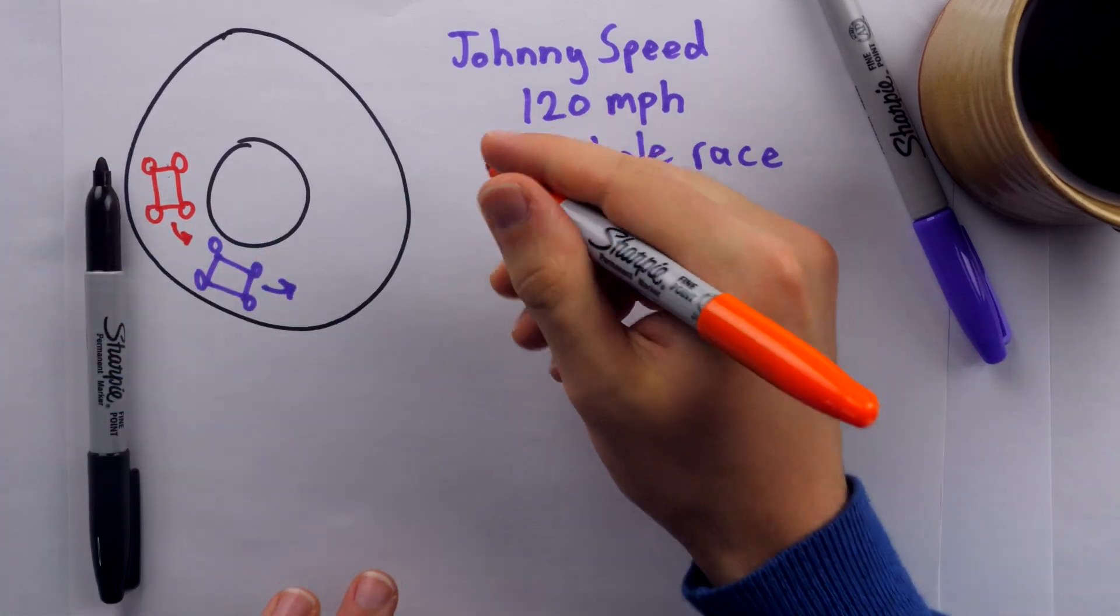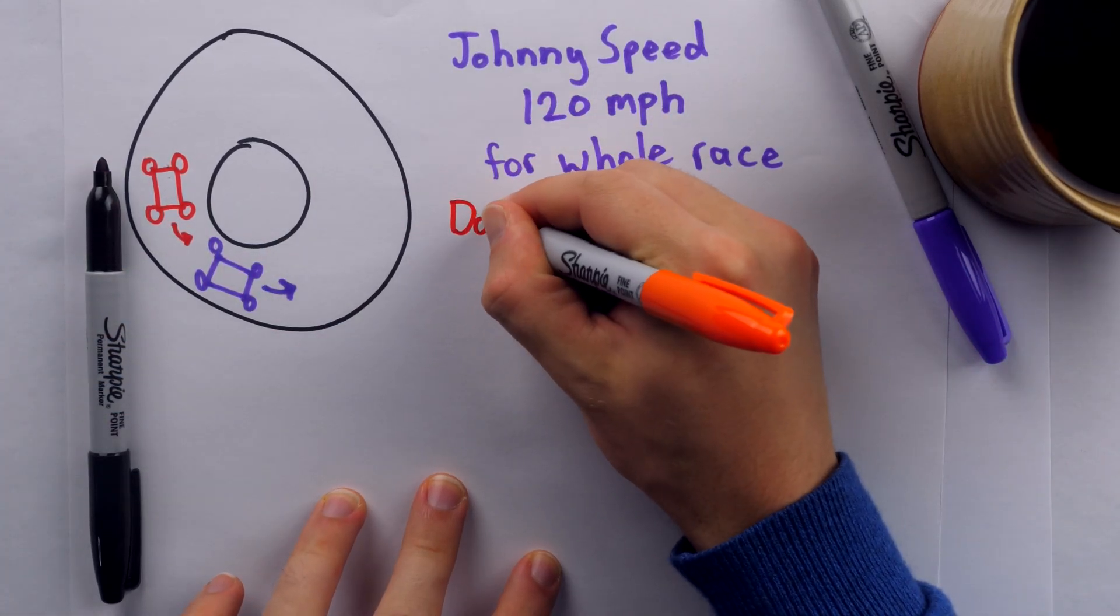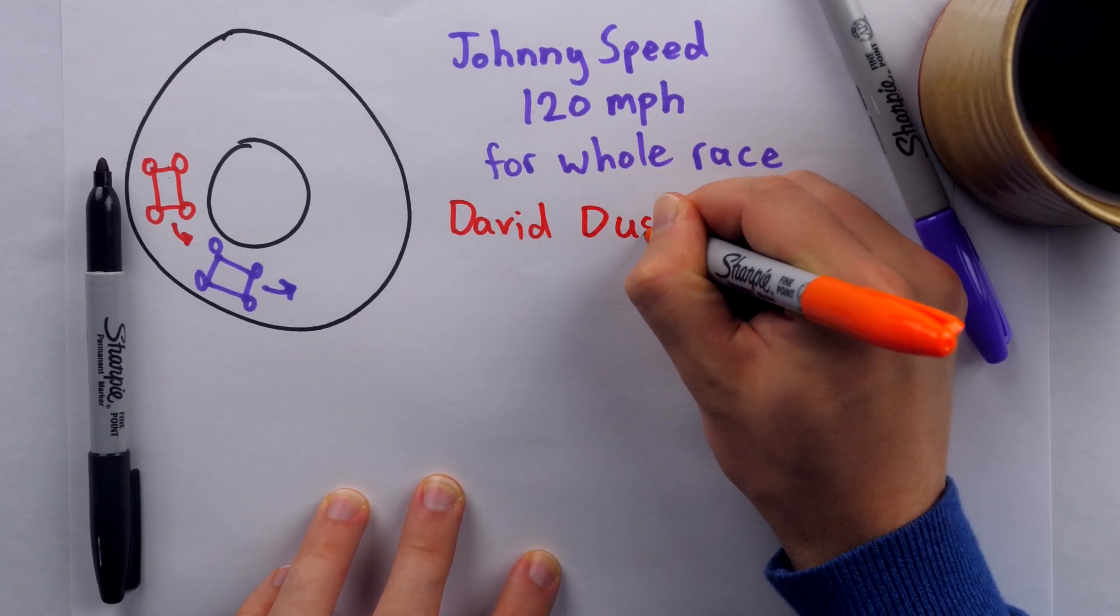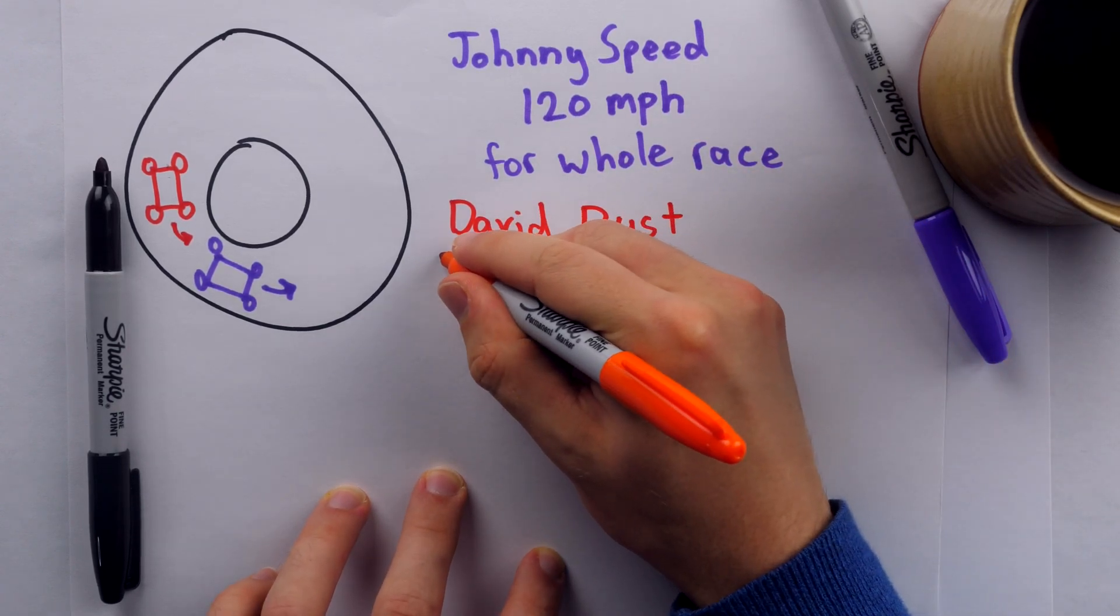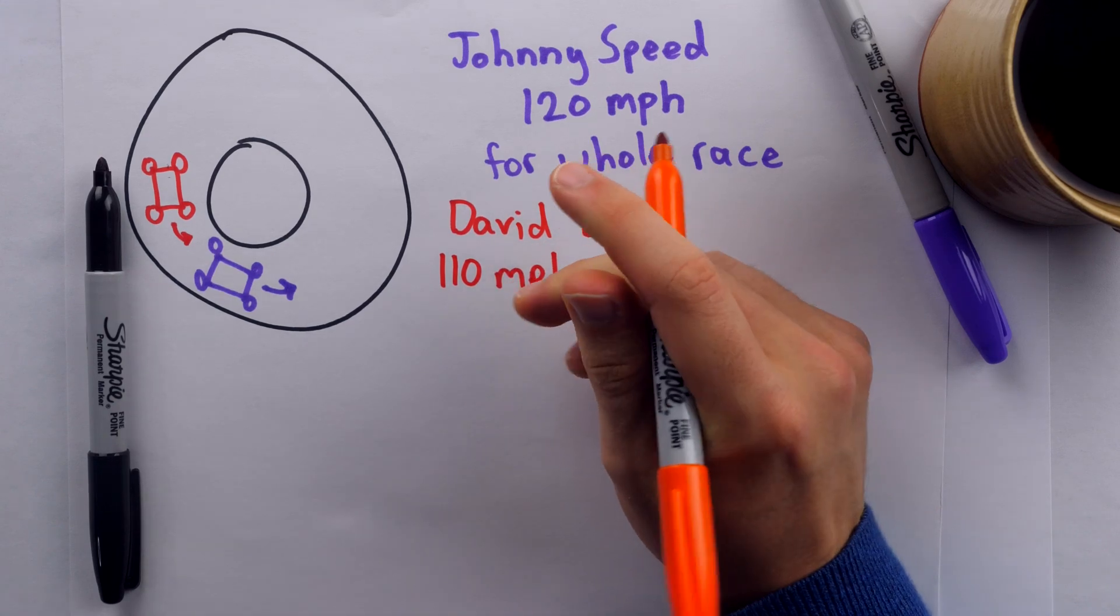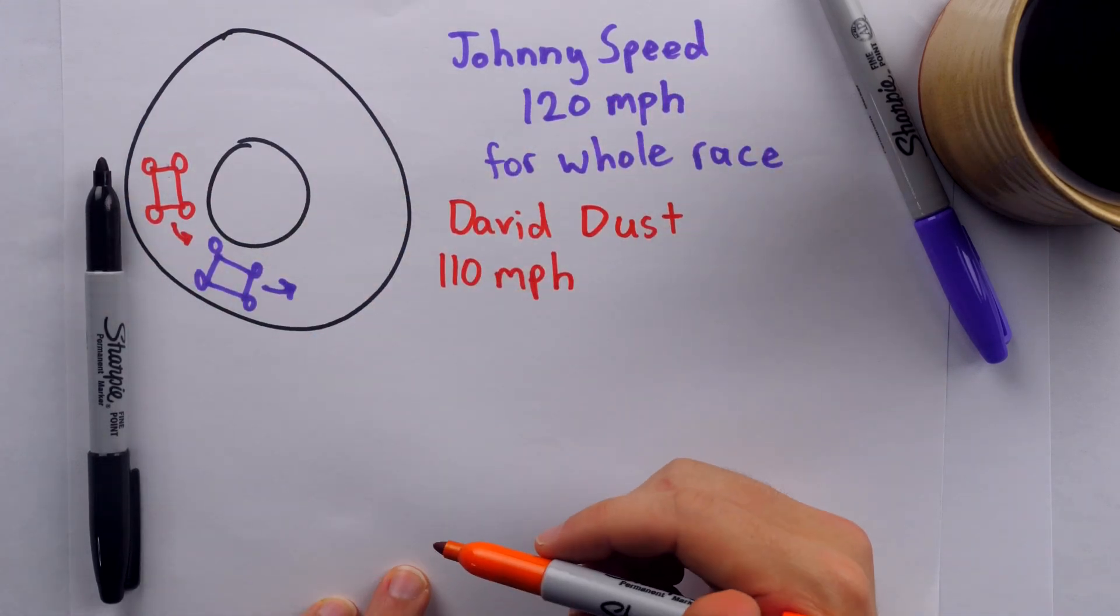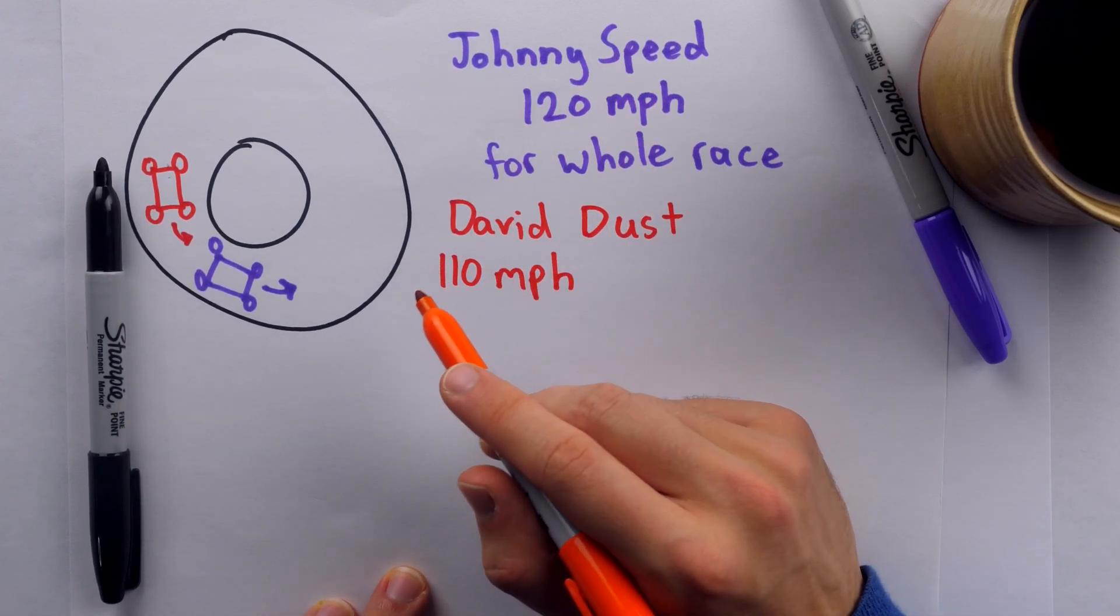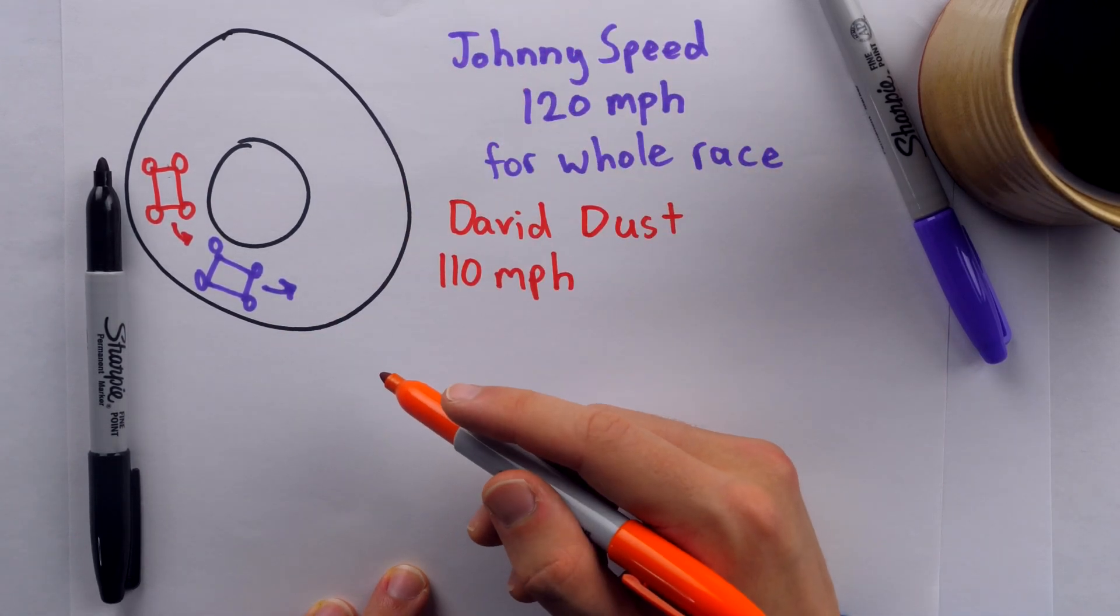On the other hand, our orange driver, Mr. David Dust, is taking a slightly different approach. He's actually going to drive at a leisurely 110 miles per hour throughout the first half of this track, but then he's going to go 130 miles per hour in the second half of the track.